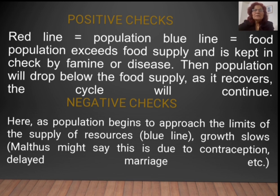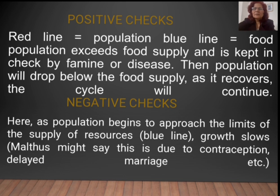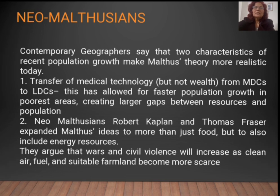For negative checks, the population begins to approach the limits of the supply of resources, creating a disruption in the balance shown by the blue line. Growth slows due to contraception, delayed marriage, and so on. The government has recently passed a bill increasing the age of marriage, which also aligns with Malthus's approach — increasing the age of marriage helps reduce population growth.